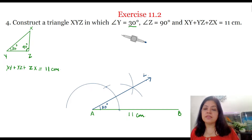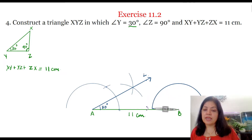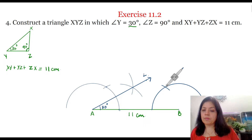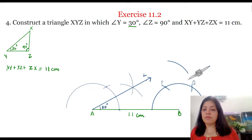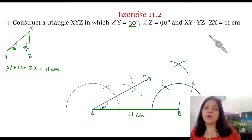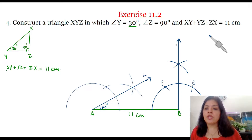Now we'll make angle B equal to 90 degrees, that is equal to angle Z. With the help of the compass, we'll construct a 90 degree angle at point B. With any convenient radius, draw an arc with B as center. Place the compass at this point and with the same radius, cut this arc two times at two different points. Let these two points be P and Q. To get 90 degrees, we'll bisect arc PQ. With B as center draw an arc, and with the same radius place the compass at Q and draw another arc cutting the previous one. Draw a ray from B through this point of intersection to get 90 degrees. Let this ray be BM, so angle B is equal to 90 degrees.